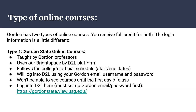Now that you're logged into your Gordon email and BannerWeb, let's talk about understanding the types of online courses we have. If you're doing the ParaPro to Teacher program, you'll definitely be taking online courses. Gordon actually has two types of online courses. You receive full credit for both and they both go on your transcript the same way. The difference is what they're called, how you log in, and what they look like — and it's important to know the distinction because you might be taking one type, the other, or a blend of both.